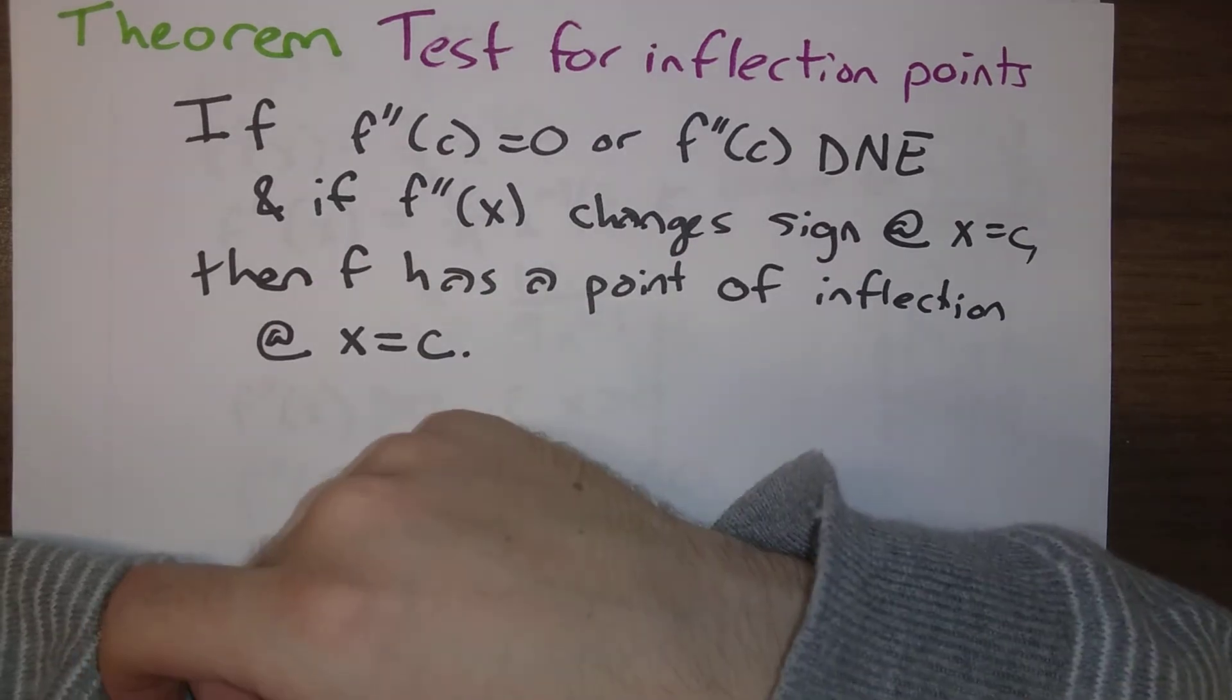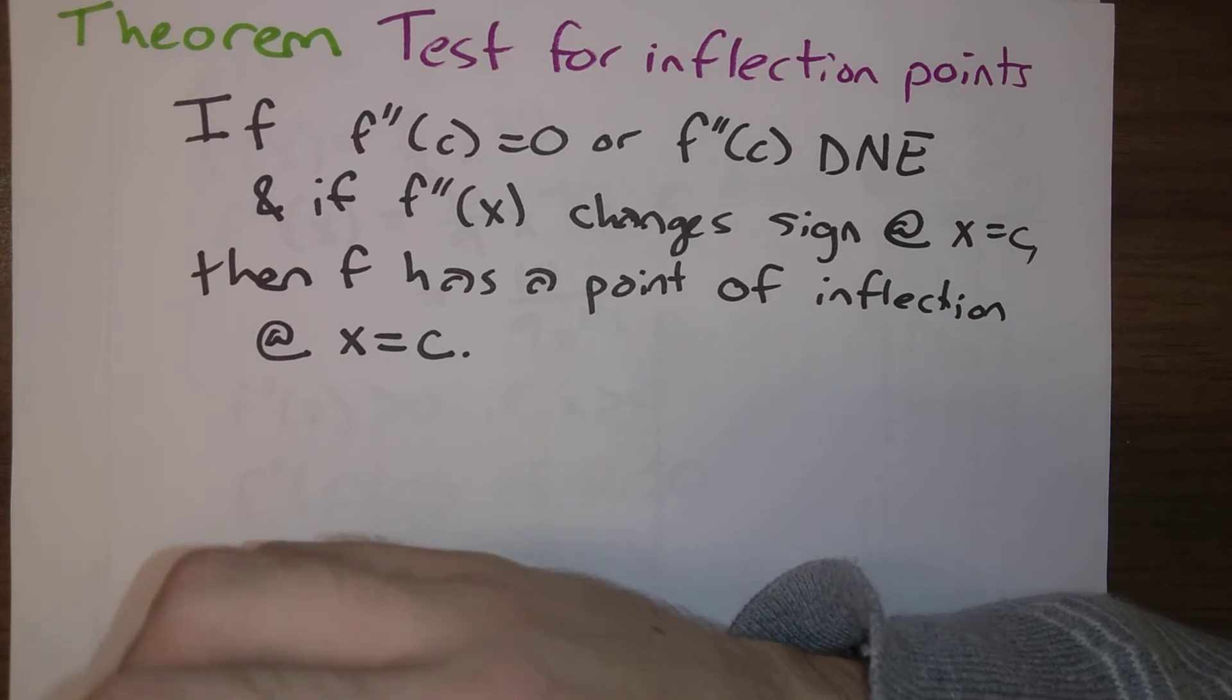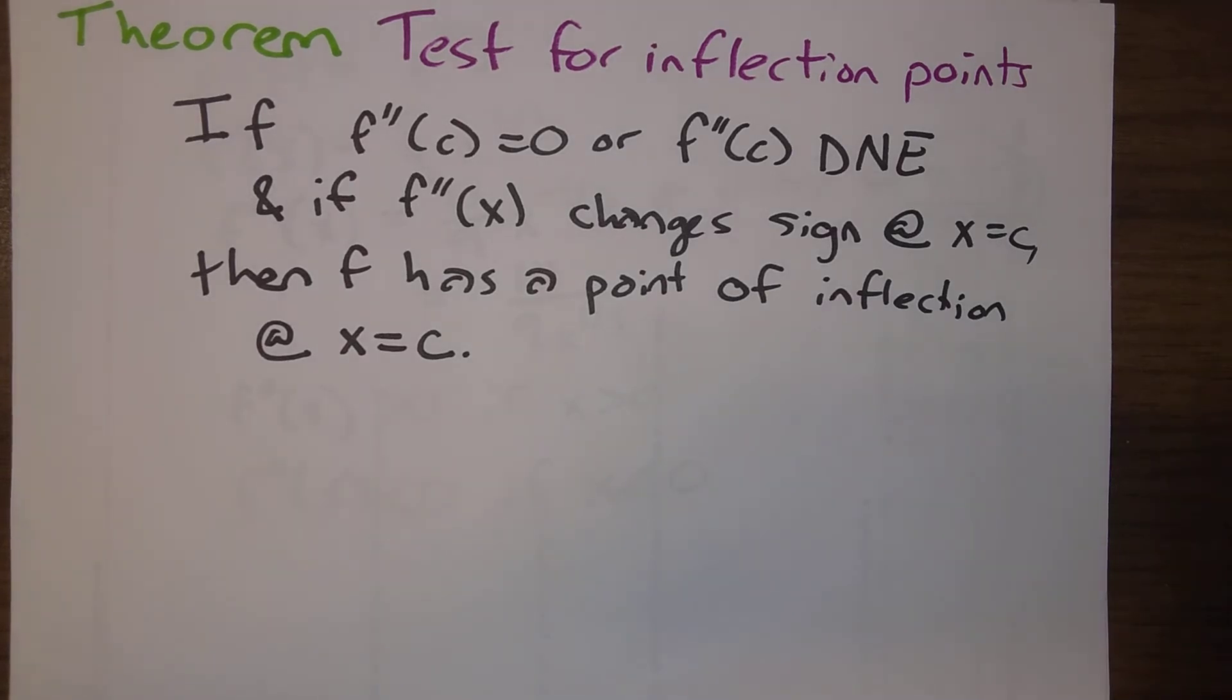If either of these things happen, the second derivative is zero or the second derivative does not exist, both of those cases are things we have to take into account when we're trying to identify inflection points.